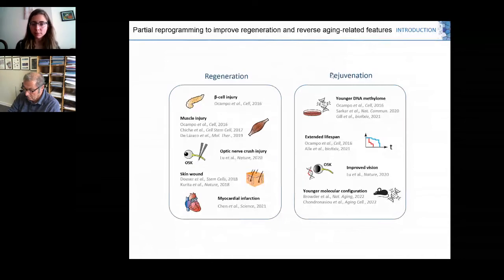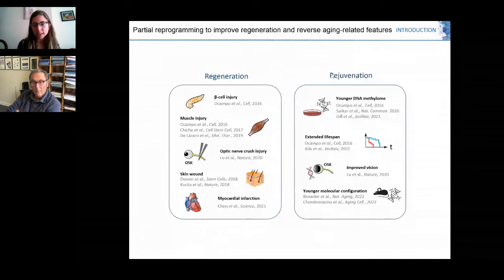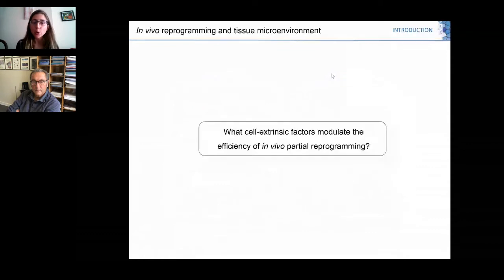All these previous studies have focused on changes in cells undergoing reprogramming. However, little is known about the microenvironment surrounding these cells. We wondered whether cells surrounding the reprogramming cells could be modulating the efficiency of the process. Our question was: what cell extrinsic factors modulate the efficiency of in vivo partial reprogramming?